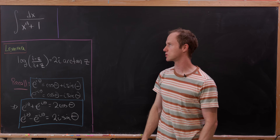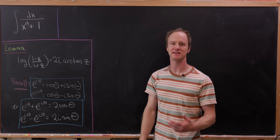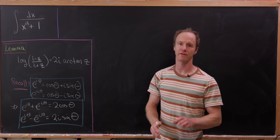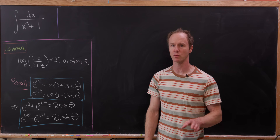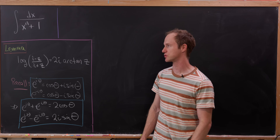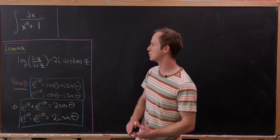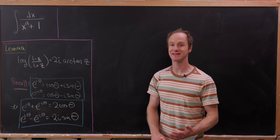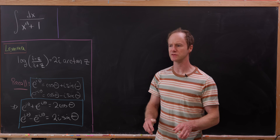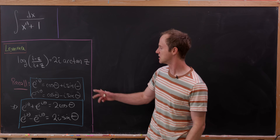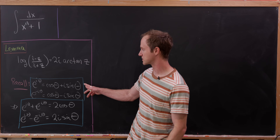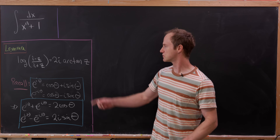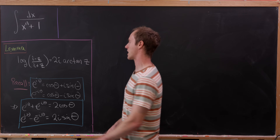Today we're going to look at a very general version of an antiderivative you might see in a second semester calculus class — the antiderivative of 1 over x to the n plus 1, where n is any natural number. We're going to use a tool that relates the logarithm with the inverse tangent, and also some stuff about complex numbers, mostly coming from Euler's formula and related versions of that.